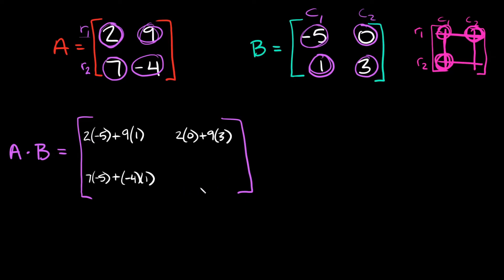And now to lastly fill in this one, remember this is going to be row two, column two, because that's where it intersects. So we're going to multiply row two times column two. So we're going to do seven times zero, plus negative four times three — go down the row, down the column — negative four times three.